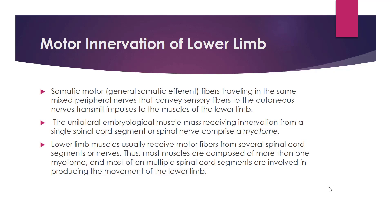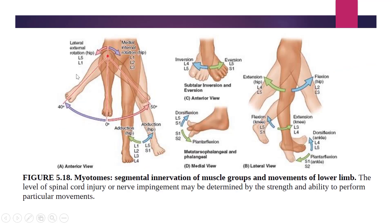In this diagram, movements at different joints of the lower limb are shown. At the hip joint, lateral external rotation is caused by L4 and L5, and medial internal rotation is innervated by L1, L2, and L3. Adduction at the hip joint is innervated by L1, L2, L3, and L4, while abduction at the hip joint is innervated by L5 and S1.